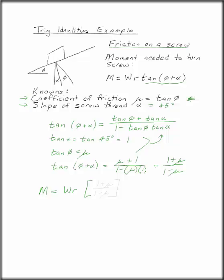Plugging this into the formula for the moment, M is equal to WR times 1 plus mu over 1 minus mu.